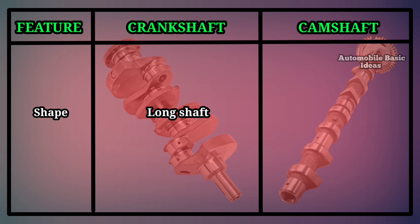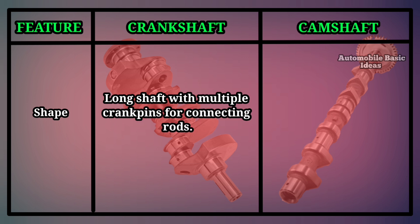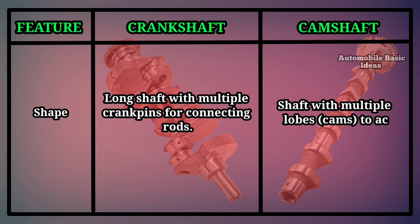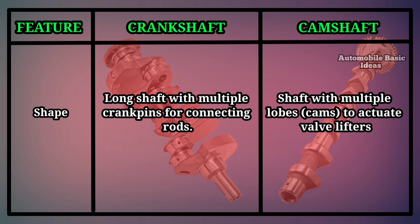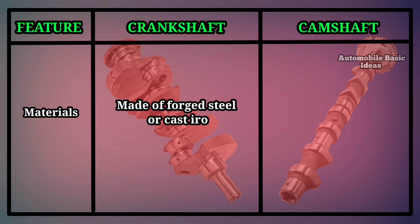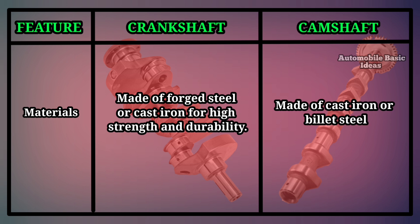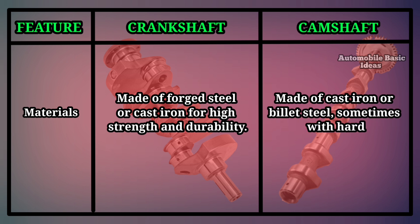Shape: The crankshaft is a long shaft with multiple crank pins for connecting rods. The camshaft is a shaft with multiple lobes, or cams, to actuate valve lifters. Materials: The crankshaft is made of forged steel or cast iron for high strength and durability. The camshaft is made of cast iron or billet steel, sometimes with hardened surfaces.